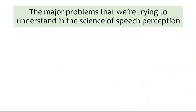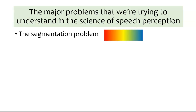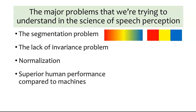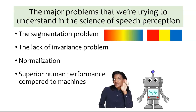There are a lot of major problems in the science of speech perception, and we'll only go over a few here, because they're pretty well-known and pretty interesting. The segmentation problem is where we convert something continuous into something discrete. The lack of invariance problem looks like a double negative, but there's a good reason for that. Normalization is the solution to that problem, or at least what we think should be the solution. All these things together will help explain why humans perform a lot better than machines when recognizing speech.